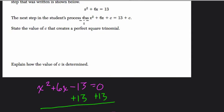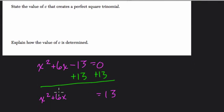The next step in the student's process was x squared plus 6x plus c. And notice they're adding c to both sides. Why? To keep the equation balanced. So state the value of c that creates a perfect square trinomial. So they're just asking us to complete the square. Now, to do that,